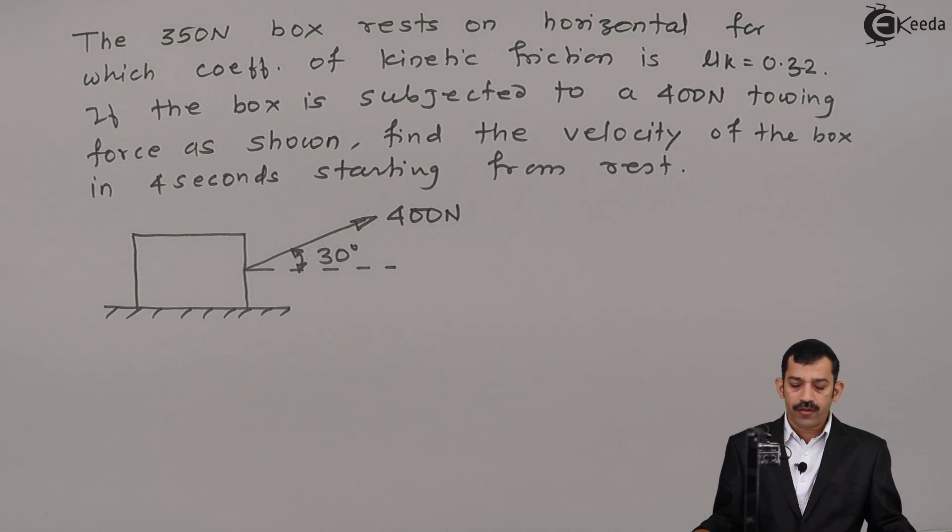The 350 Newton box rests on horizontal surface for which coefficient of kinetic friction is mu k equal to 0.32. If the box is subjected to a 400 Newton towing force as shown, find the velocity of the box in 4 seconds starting from rest.